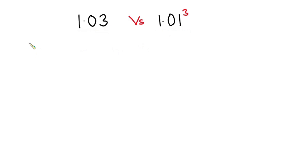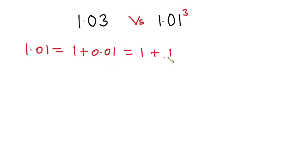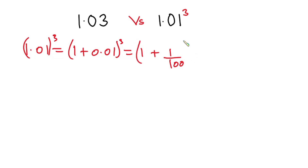1.01 could also be written as 1 plus 0.01, which is also the same as 1 plus 1 over 100. So 1.01 to the third power is also the same as (1 plus 0.01) to the third power, which equals (1 plus 1/100) to the third power.